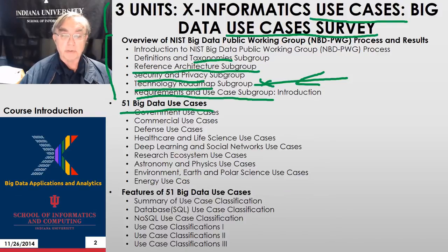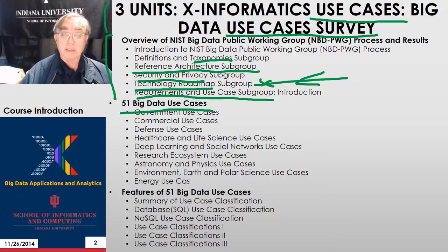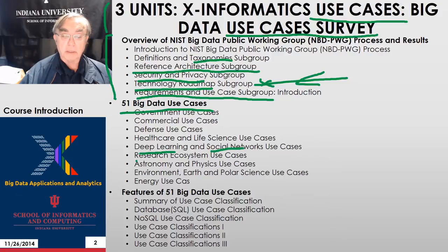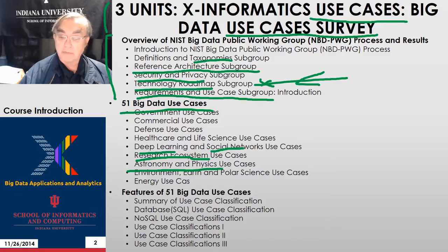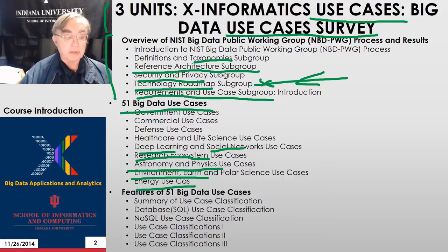Those 51 use cases were divided into broad areas: government, commercial, defense or national security, health care and life sciences, medicine, biology, deep learning and social networks, the so-called research ecosystem like accelerators. Astronomy and physics had lots of use cases. Environment, Earth, and polar science had lots of use cases. And we should have had more, but we only had one energy use case.